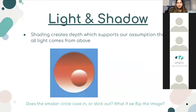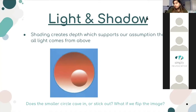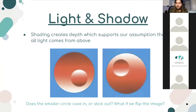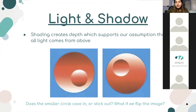The last monocular cue is light and shadow. Shading creates depth, which supports our assumption that all light comes from above — like the sun is always on top of us. Do you think the smaller circle caves in or sticks out? It does look like it sticks out because the light is coming from above, illuminating the top. But in the next image, the circle looks like it's caving in. We always assume light comes from the top, so in the first case we assume it's sticking out, and in the second we assume it's caving in because of where the light hits. That's a pretty cool illusion.